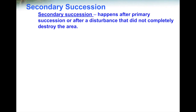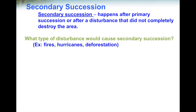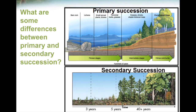Secondary succession can either happen after primary succession, or after a disturbance that doesn't completely destroy the area — where there's still some soil left and maybe some plants were able to survive. Examples of disturbances that cause secondary succession include forest fires, hurricanes, tornadoes, or human-caused events like deforestation, where there's still soil left and not everything is completely destroyed. Because things are not completely destroyed, we don't start the same way as primary succession. Since there's still soil left, we don't need lichens — we can bring plants in directly.